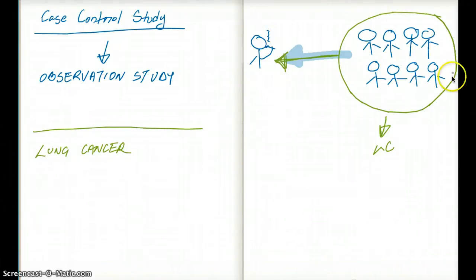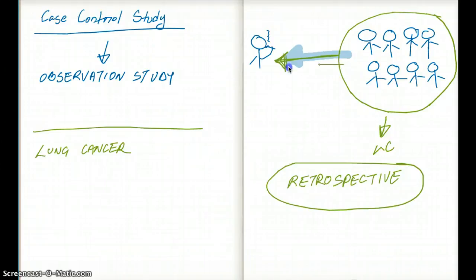So this kind of looking back to the past to see what factors could have contributed to this particular disease, this kind of observational study is called case-controlled study. Another word that you're often going to see related to case-controlled study is retrospective. Retrospective means looking back.